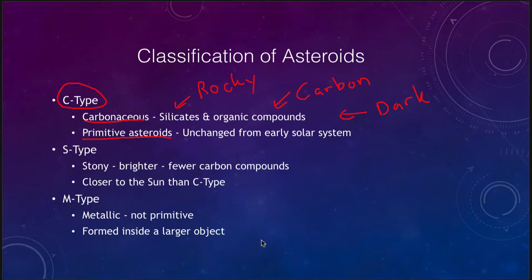The primitive nature of C-type asteroids is important because it gives us a chance to study the objects that four and a half billion years ago were colliding together to form the Earth. On the Earth itself, everything got melted together and separated by density. But here, we're actually seeing those original objects — a chance to study the things that billions of years ago made up the Earth.